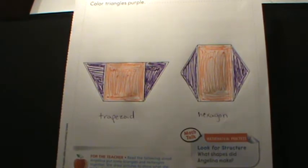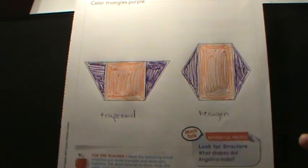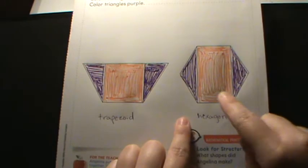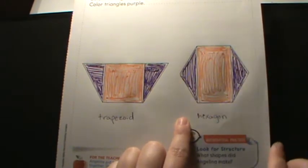If we take apart that trapezoid, we could break it into two triangles and a square. If we take apart that hexagon, we could have a rectangle and two triangles.